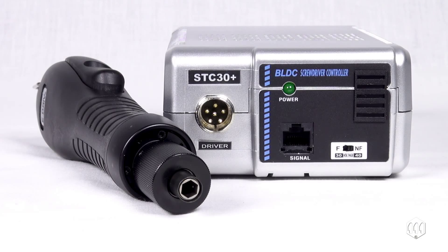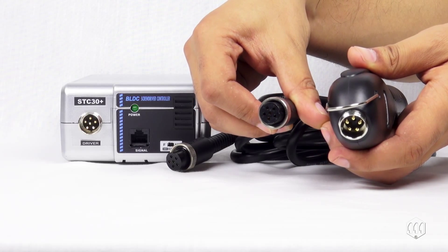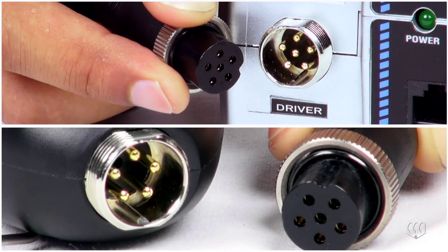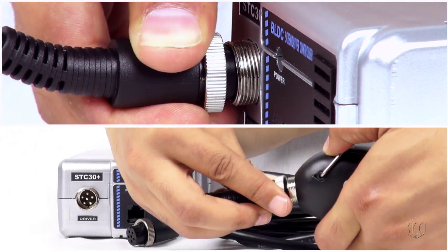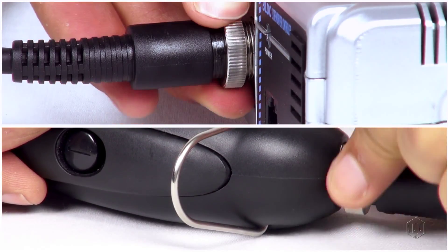Always use the screwdriver with a compatible transformer model. Connect the tool to the transformer with the cable. Align the notch in the plug with the notch in the socket and tighten the knurled ring.